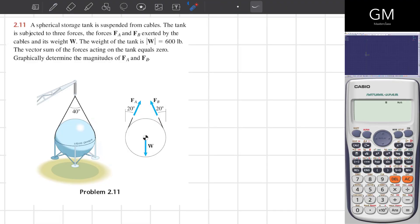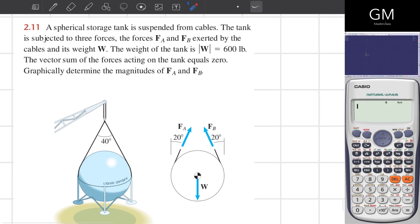We will solve the following exercise. The exercise is number 2.11. A spherical storage tank is suspended from cables. The tank is subjected to three forces. The forces F_A and F_B exerted by the cables and its weight W.